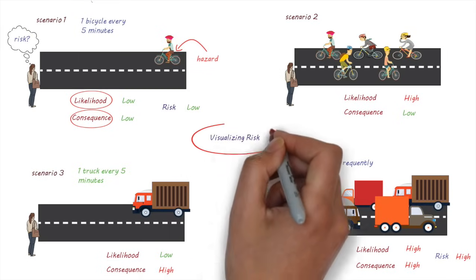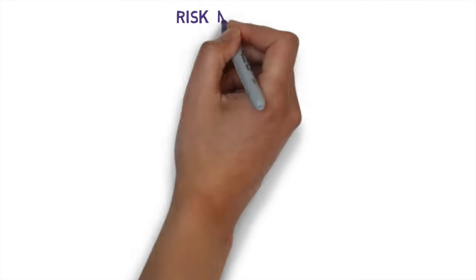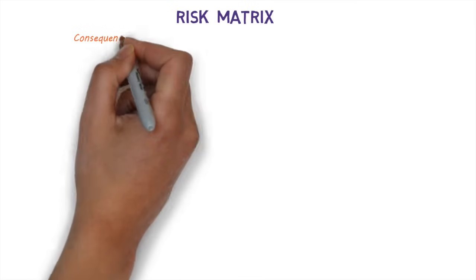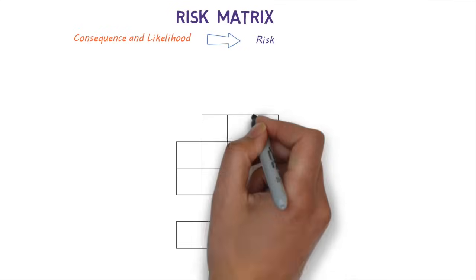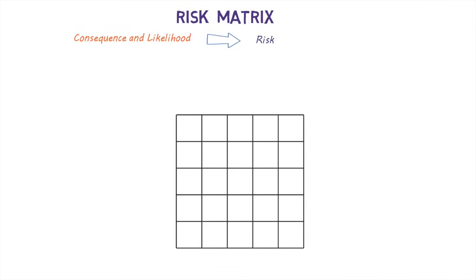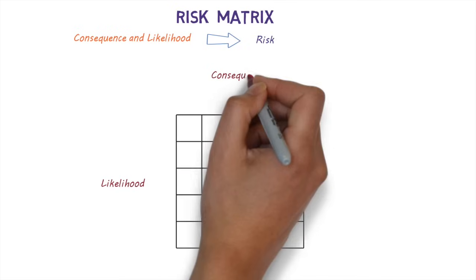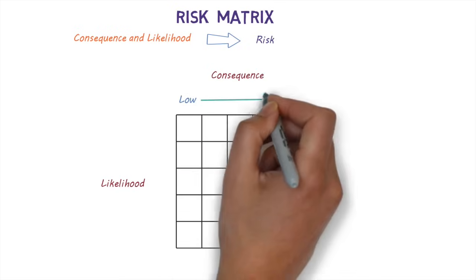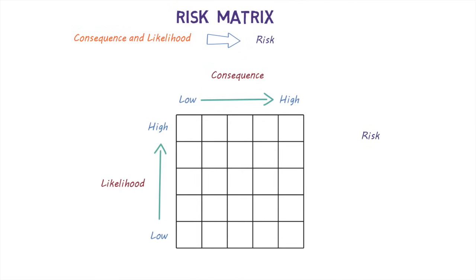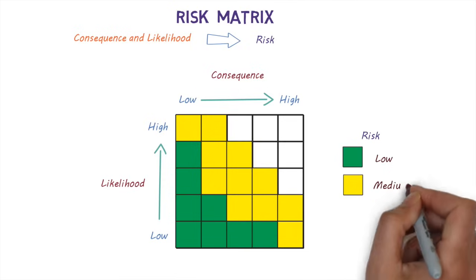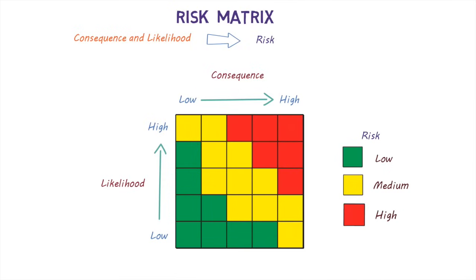A simple way of visualizing this and figuring out the overall level of risk is by using a risk matrix. In a risk matrix, information about consequence and likelihood can be used to determine the overall level of risk. Let's have a look at a simple risk matrix. A risk matrix is basically a table or grid with a measure of likelihood on one side and consequence on the other, graded from low to high. The combination of the two, which is the overall level of risk, can be categorized as low, medium, or high and color-coded.